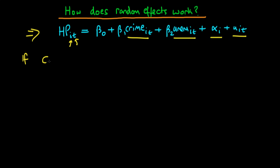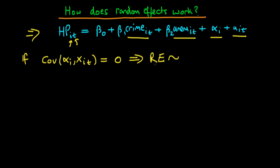The assumption under random effects is that the covariance of alpha_i with any of the independent variables x_it is equal to zero. We spoke about how in these examples the random effects estimator is better than first differences or fixed effects estimation, and also better than pooled OLS. Random effects estimation is a type of feasible generalized least squares estimator, because essentially what we're doing is correcting for the presence of serial correlation.